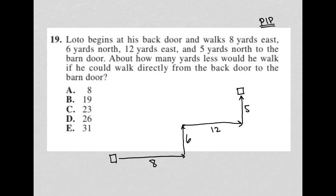About how many yards less would he walk if he could walk directly from the back door to the barn door? I'm going to first figure out how many yards did he walk in the first place. There's eight yards plus six north. So eight plus six is 14, plus 12 is 26, and plus five is 31. So he walked 31 yards going the direction provided by the question.